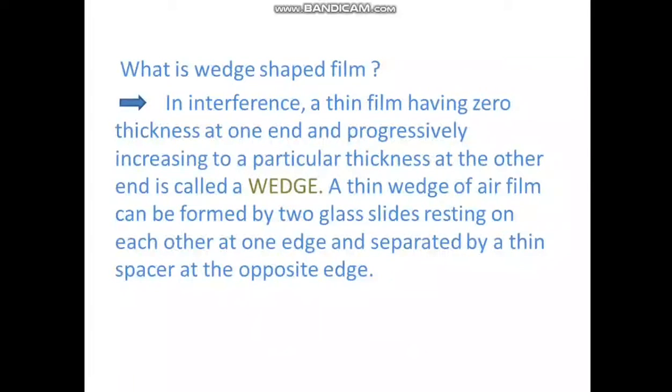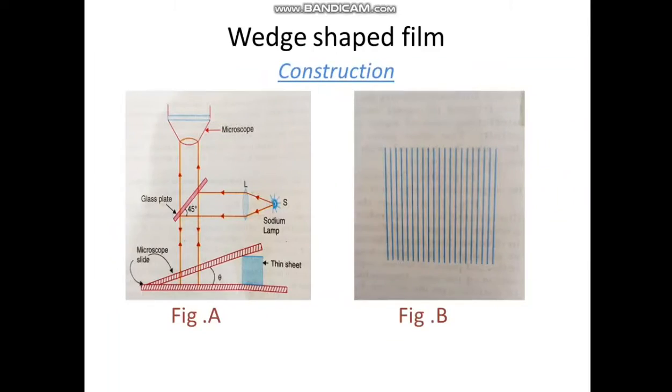A thin wedge of air film can be formed by two glass slides resting on each other at one edge and separated by a thin spacer at the opposite edge.